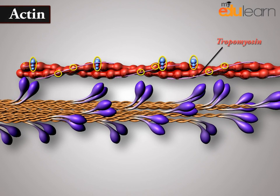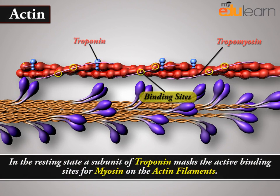In the resting state, a subunit of troponin masks the active binding sites for myosin on actin filaments.